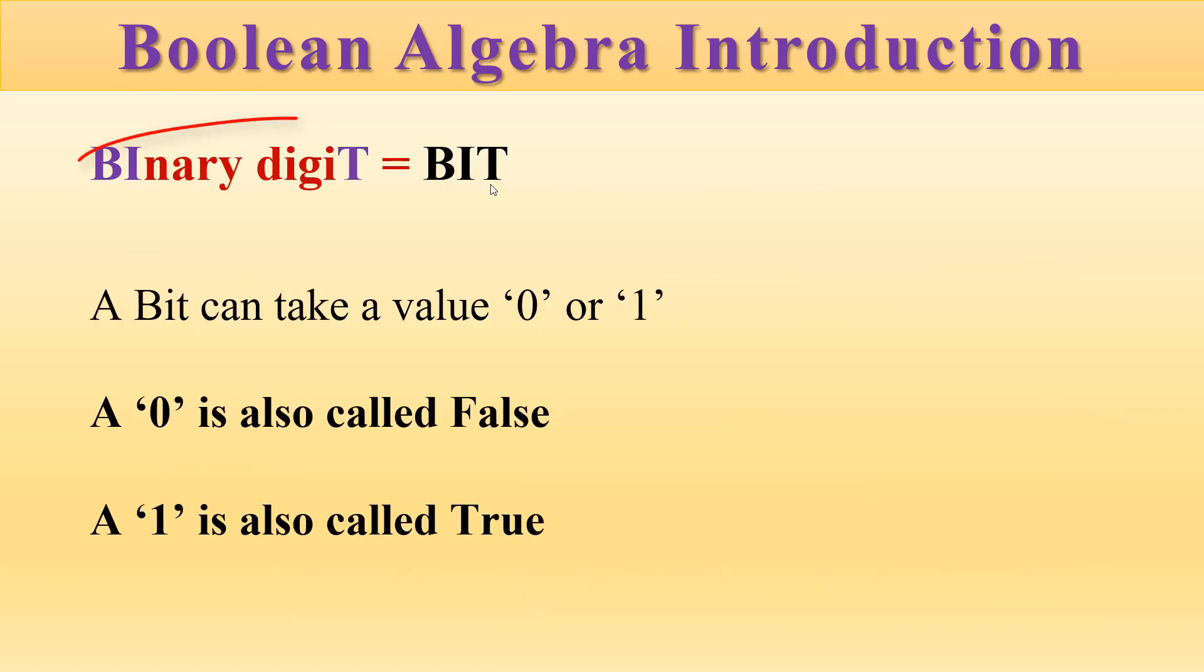We start the discussion with the term binary digit. A bit can represent a value zero or one. A bit is nothing but a binary digit, either zero or one.